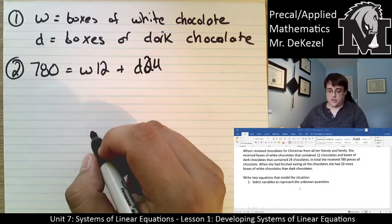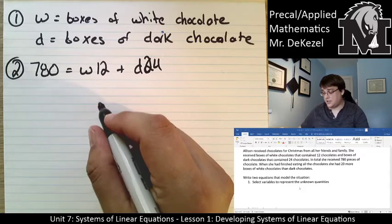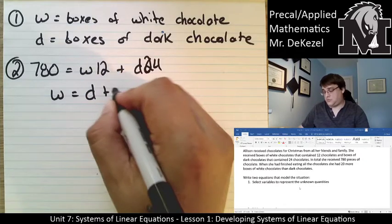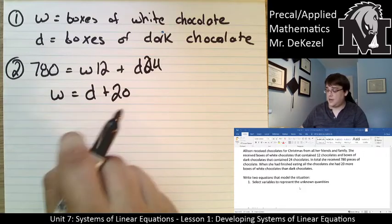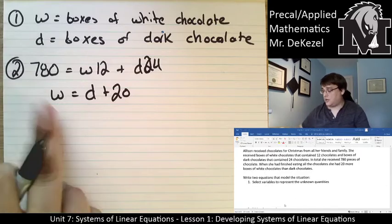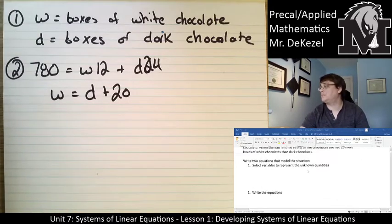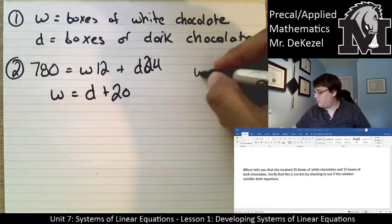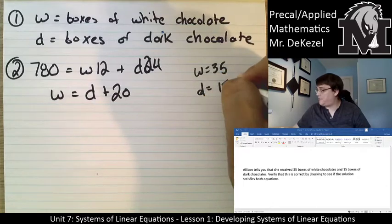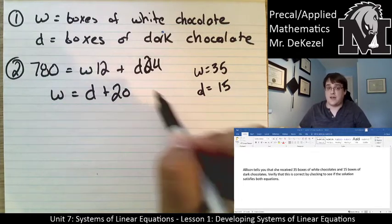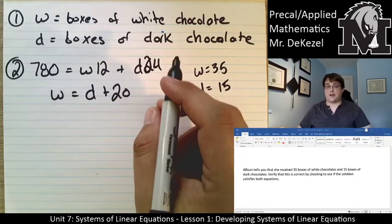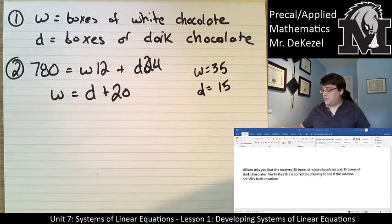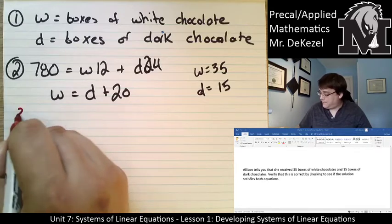She also knows that after she finished eating she had 20 more boxes of white chocolates than dark chocolates. So the number of white chocolate boxes must equal the number of dark chocolate boxes plus 20. You can write that equation in a couple of different ways. Allison tells us she received 35 boxes of white and 15 boxes of dark. We're going to plug these values into the equations to check if that's correct.